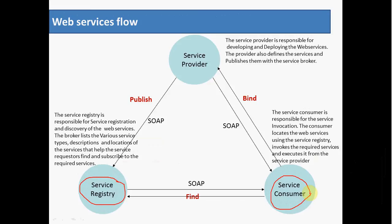For example, consider a banking application built on service-oriented architecture. Different functionalities like new account opening, cash withdrawal, cash deposit, and funds transfer can be treated as different operations, and the bank exports these as web services. End users — the service consumers — can make use of them to perform online transactions such as logging in, making cash withdrawals, funds transfers, and various account-related activities. This is how the communication flow happens between service provider, consumer, and registry.